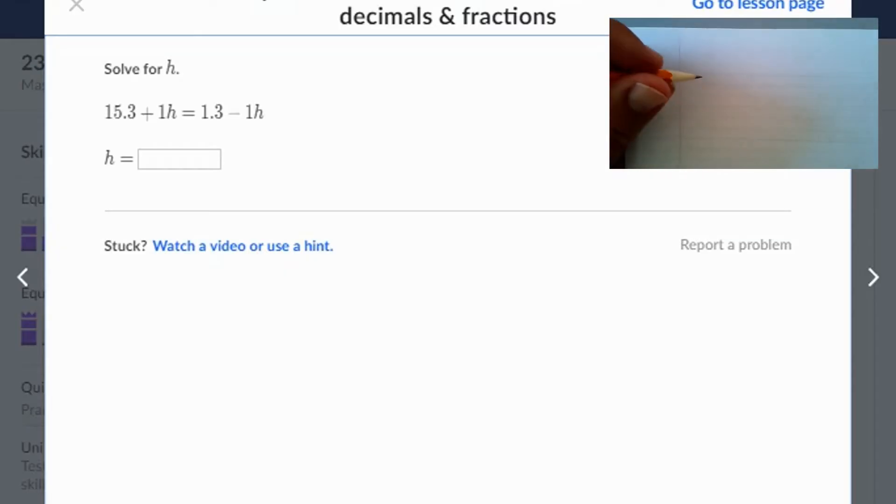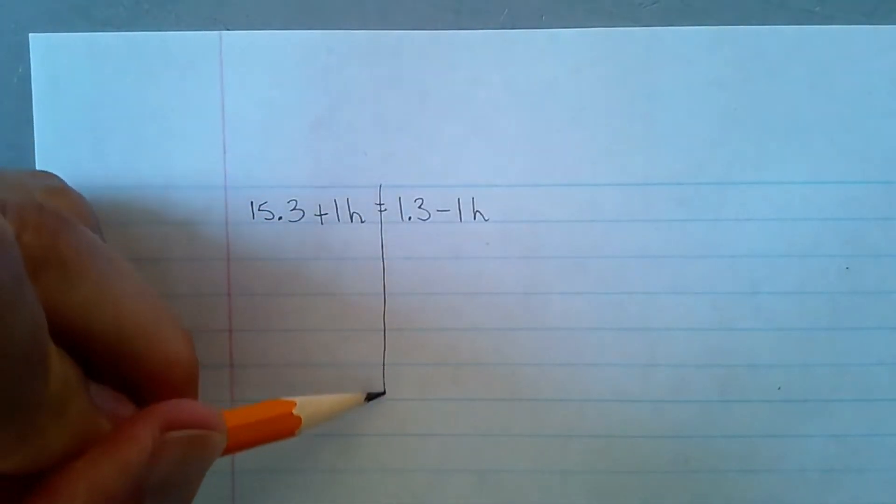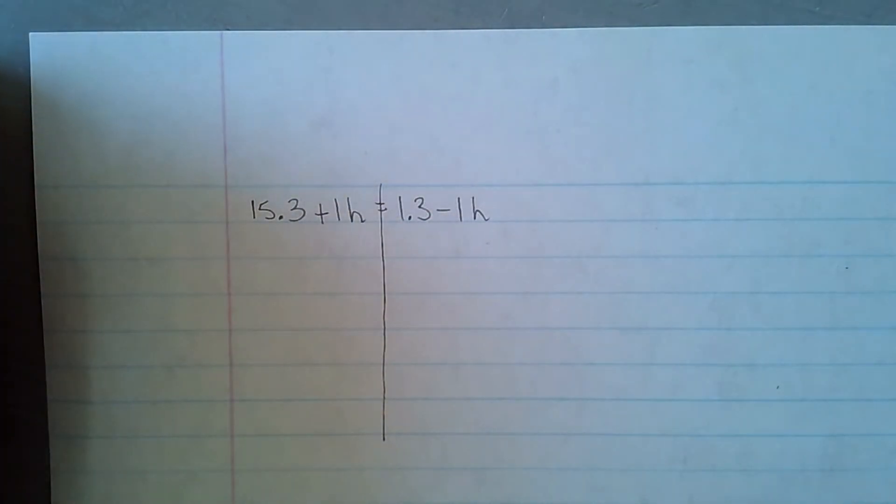I'll write this one down. That is 15.3 plus 1h equals 1.3 minus 1h. Well, I'm going to draw a line here. Anything that passes this line on the other side has to use inverse operations.